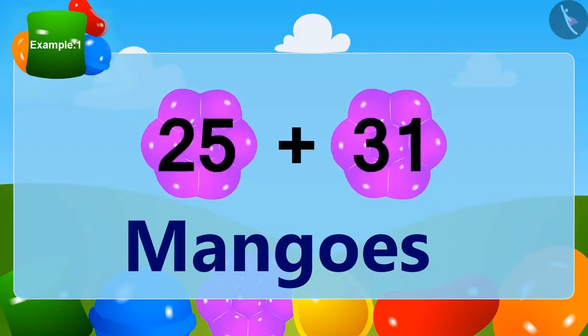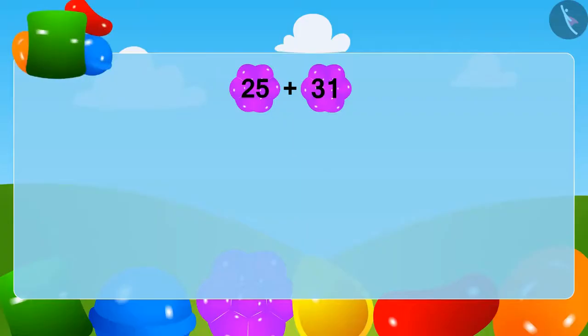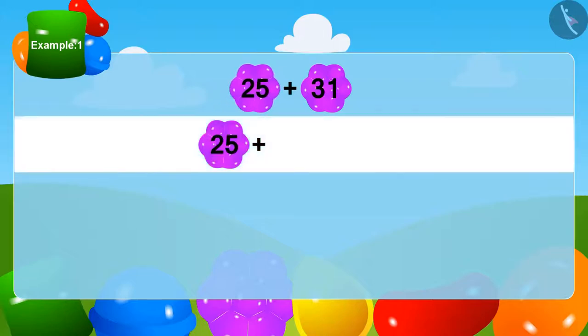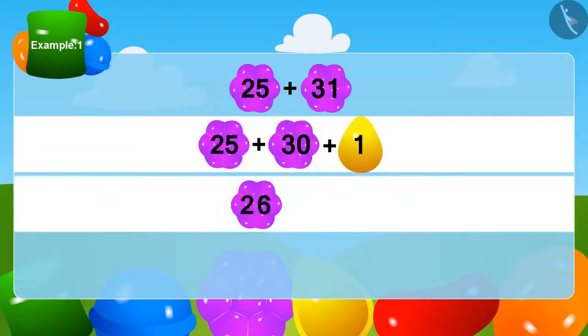Let's learn one more method of doing this. We can write 31 as 30 plus 1. Now, we will add 1 to 25. So now, how many? Yes, 26.